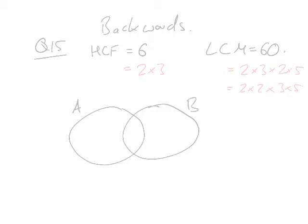So our two numbers, we don't know what they are. I'm going to call them A and B. Two and three from the highest common factor goes in the middle.